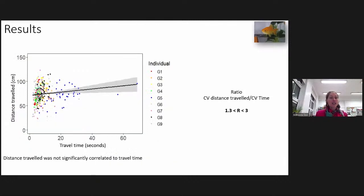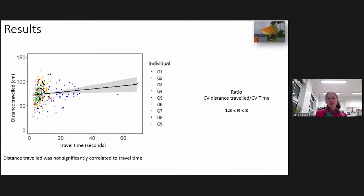We also wanted to determine if fish use travel time to estimate distance, but distance traveled and travel time were not correlated. When we measured the ratio as previously described, only one individual had a ratio close to 1, while all others had ratios above 1.5 and close to 2. This indicates that time was not used to estimate distance.